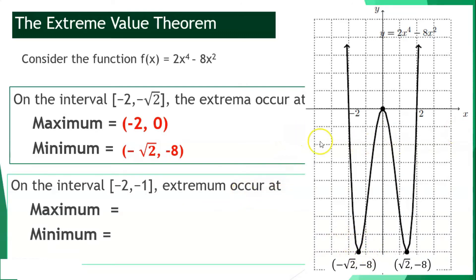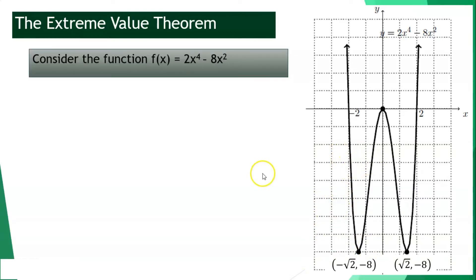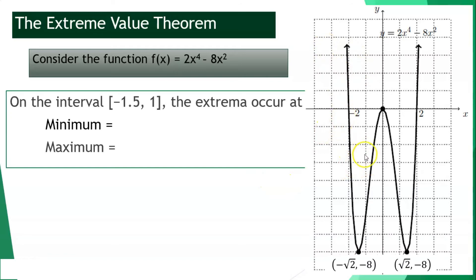Using the same graph but with the interval from negative 2 until negative 1, our maximum point is located at negative 2, 0, and the minimum point is located at negative square root of 2, negative 8. Still using the same graph, but with the interval from negative 1.5 until positive 1, our minimum point is still located at negative square root of 2, negative 8, while the maximum point is located at 0, 0.